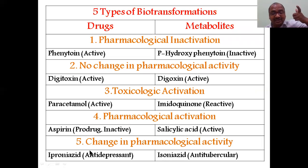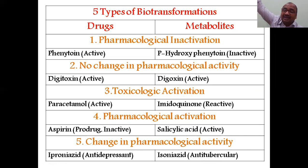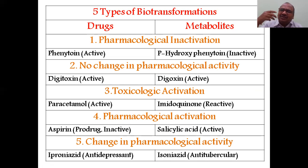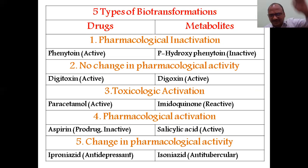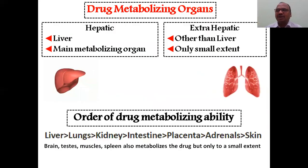The fifth type is a change in pharmacological activity. Iproniazid has antidepressant activity, but in the body, due to biotransformation, it is converted into isoniazid, which is a wonderful drug for tuberculosis. So antidepressant activity is converted into anti-tubercular activity. This is a bumper offer — if a patient is suffering from both depression and tuberculosis, the doctor can give iproniazid, which provides both antidepressant and anti-tubercular action.